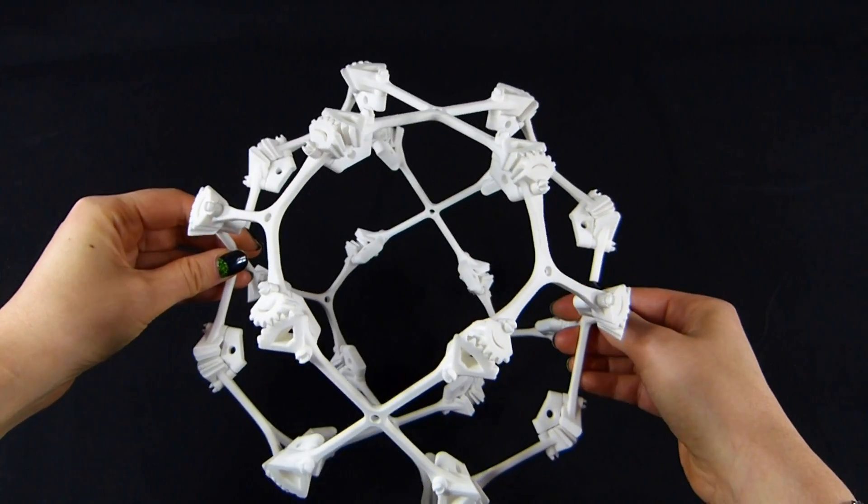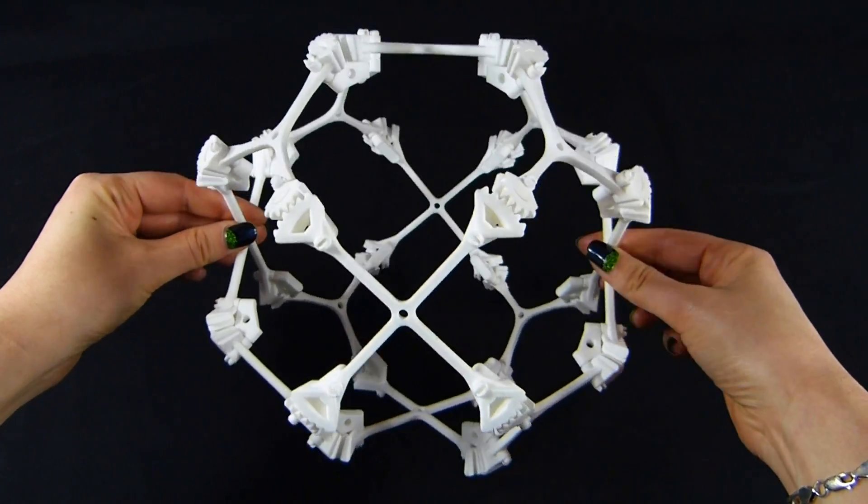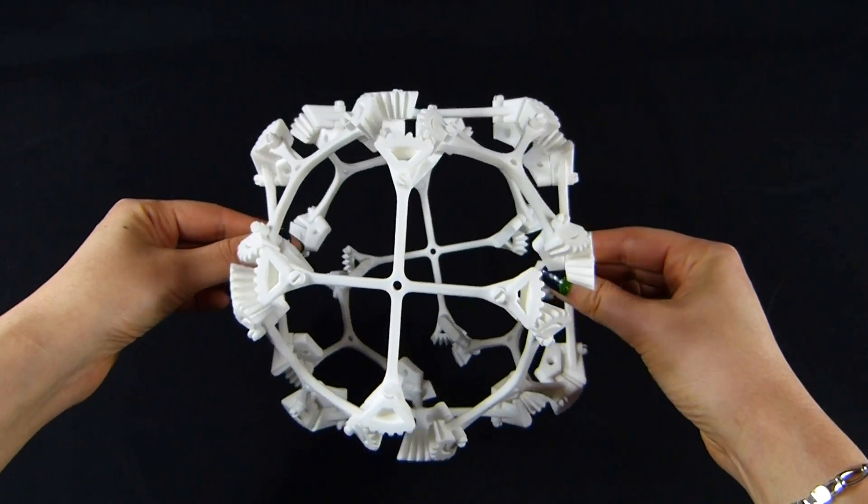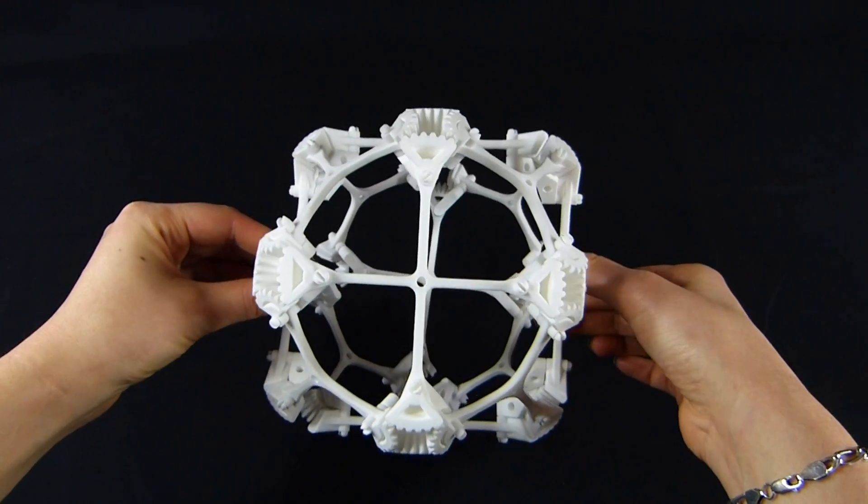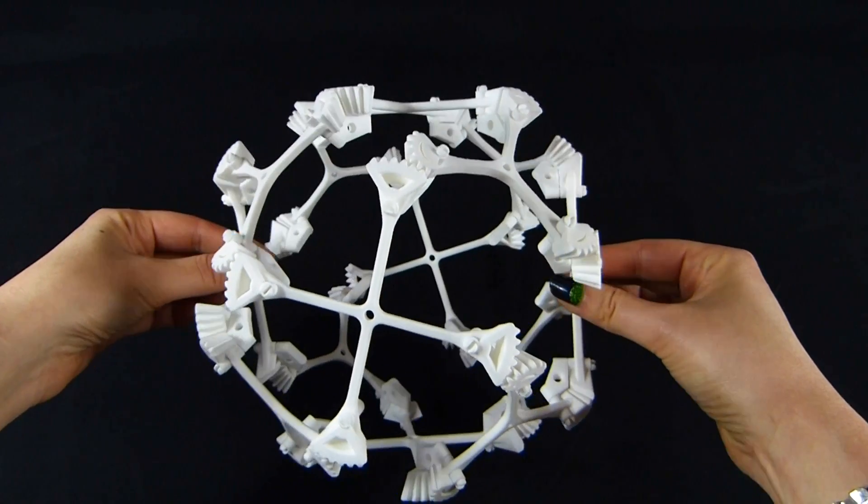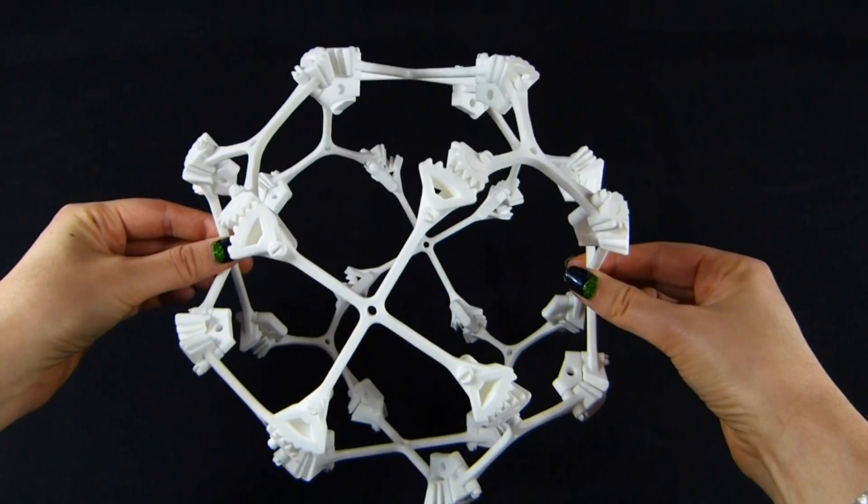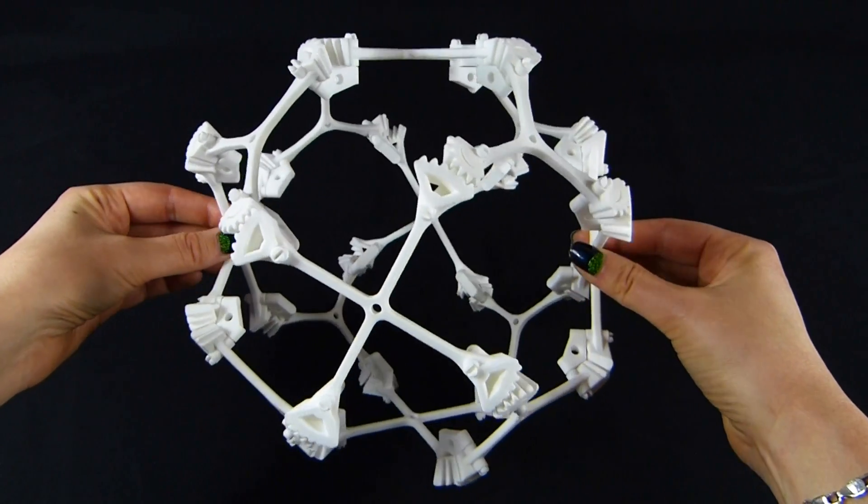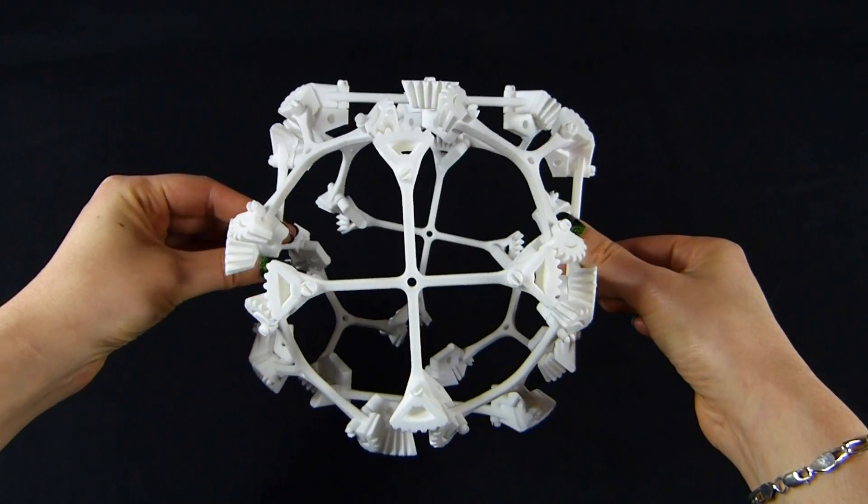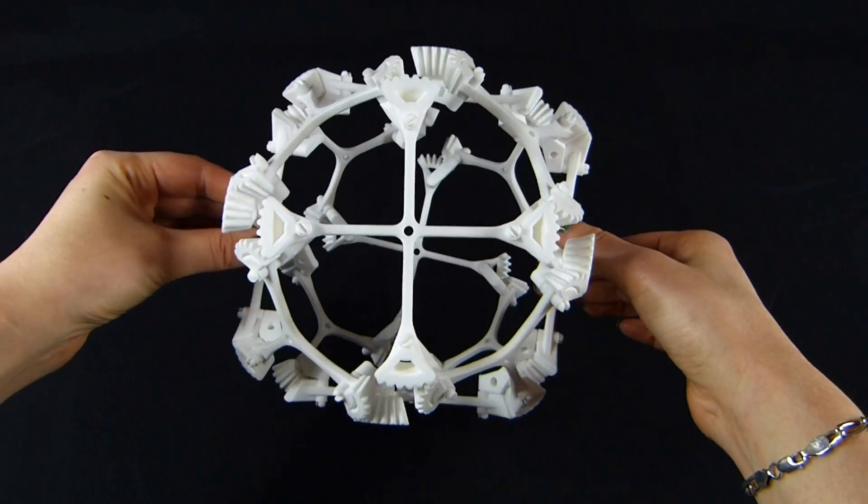This is a kind of jitterbug. We'll show you the original jitterbug in a second. It's a polyhedron whose faces we've turned into Xs and Ys, and they're hinged at the corners of those faces, at the ends of the X and the Y, so that it can rotate. Different parts of it rotate in this interesting way, and it expands and contracts as it goes.